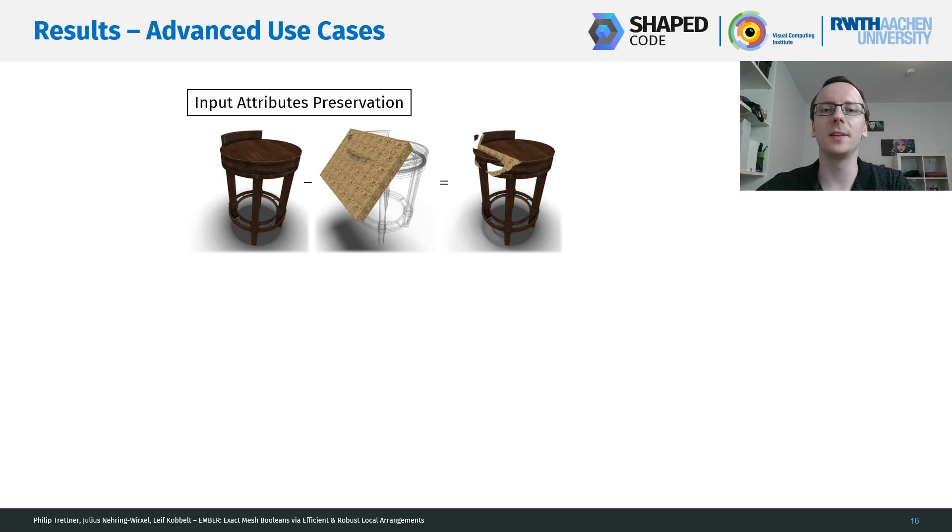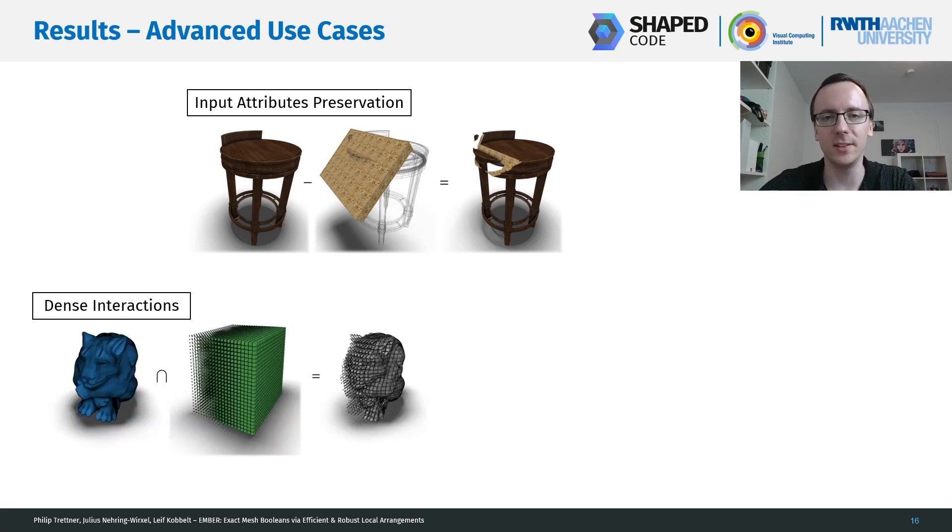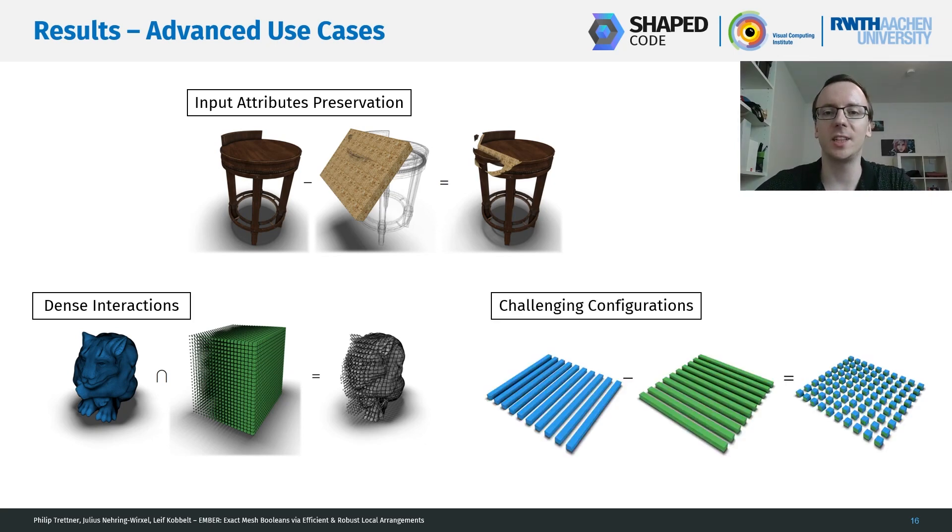The result of our method is a potentially cut-up subset of the input triangles. So it is rather easy to transfer input attributes to the output. So here you see UV coordinates transferred over, and it is also really easy to transfer material parameters via barycentric interpolation. Our method also works with dense interactions between the objects, and we also tested various challenging configurations. And if you look into the paper, you see that actually all degenerate cases are handled properly.